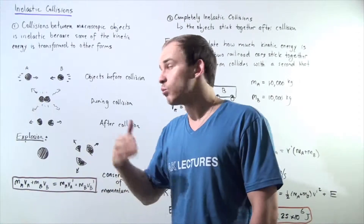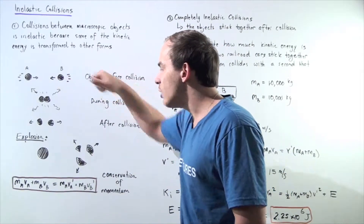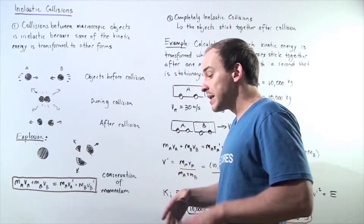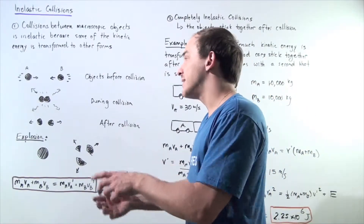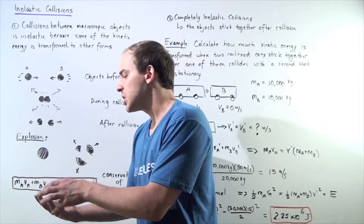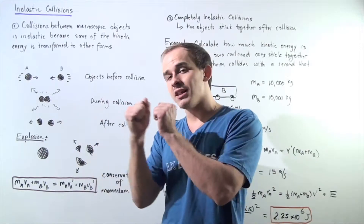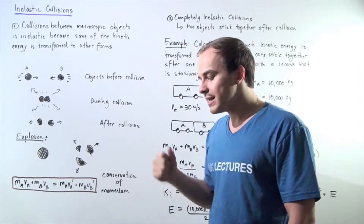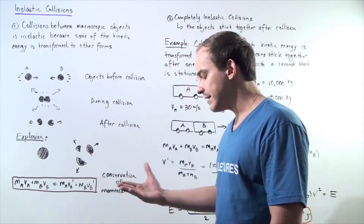One form of energy that will be produced is sound. Sound waves are a form of energy, so macroscopic kinetic energy goes into creating sound waves. That is exactly why when two objects collide, we hear that collision — because some of that kinetic energy is transformed into sound waves.